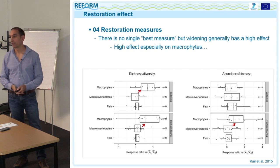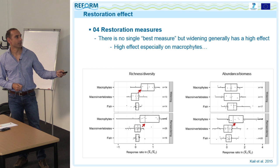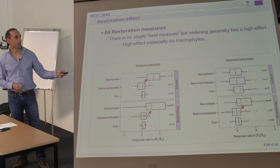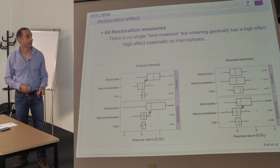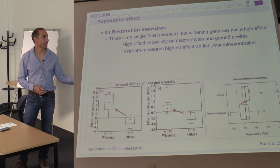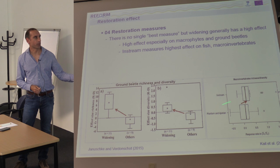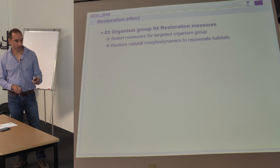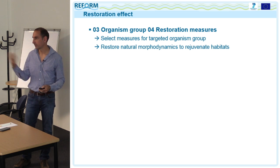There is no single best restoration measure. Widening seems very effective for macrophytes — the effect on macrophyte richness and diversity was higher in widening projects compared to invertebrates and fish. The same holds for remeandering projects. We found similarly large effects of widening projects on ground beetle richness and diversity, and a higher effect of in-stream measures on macroinvertebrate richness and diversity compared to planform and riparian measures. Therefore, you should select measures for your targeted organism group.